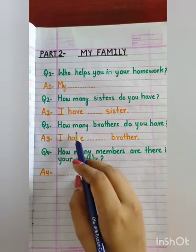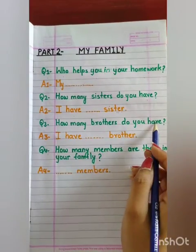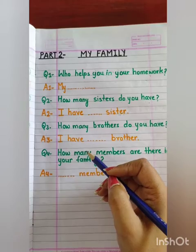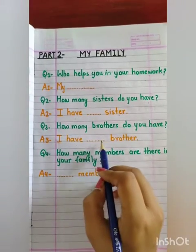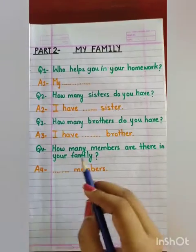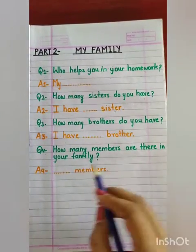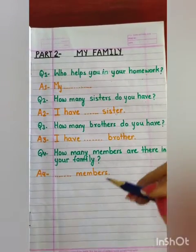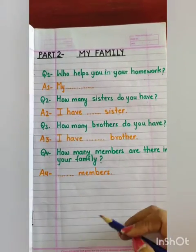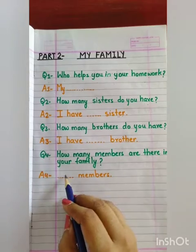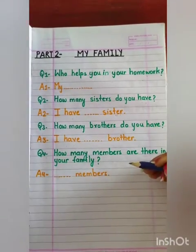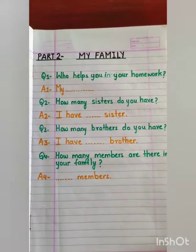Question number 3: How many brothers do you have? Suppose you have 2 brothers — you will say 'I have 2 brothers'. Question number 4: How many members are there in your family? Suppose you have 10 members — you will say 'Ten members'. This way you will revise and read all the questions.